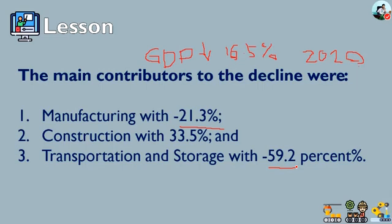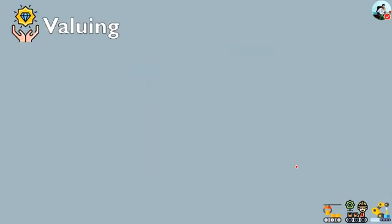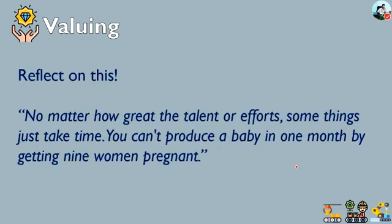This concludes our module 5 on the manufacturing industry. For the valuing section, please reflect on this saying by Warren Buffett: 'No matter how great the talent or efforts, some things just take time — you can't produce a baby in one month by getting nine women pregnant.' Thank you, and don't forget to answer the post-test.